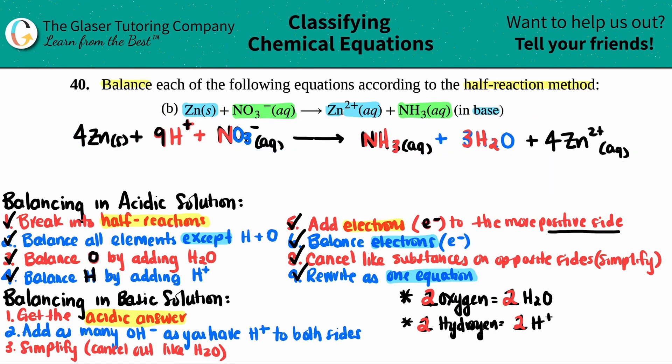Now, step one is already done. We got the acidic solution. This is the acidic answer. Now all I have to do is just add as many OH⁻ as you have H⁺ to both sides. So find that H⁺ right here. How many H⁺ do you have? I have nine. So that means I have to add nine OH⁻. And you got to be fair. If you add it on this side, you got to add it on the product side as well. So there's going to be a plus nine OH⁻ at the end. That step's done. That was easy.